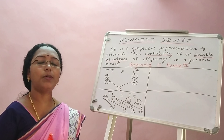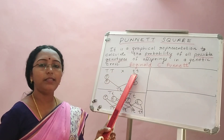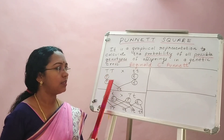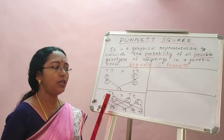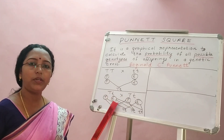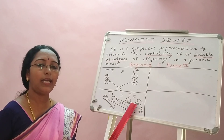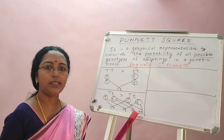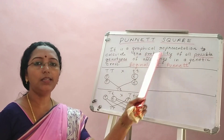Let us see how this Punnett square works. In the last sessions, we learned how crosses work: the alleles of the parents separate out in the gametes for both the parents, then they unite to form the F1 progeny. The F1 progeny are self-crossed, the alleles separate out into gametes again, and they unite at random to get the F2 progeny. The same thing is represented in a graphical format — that representation is the Punnett square.